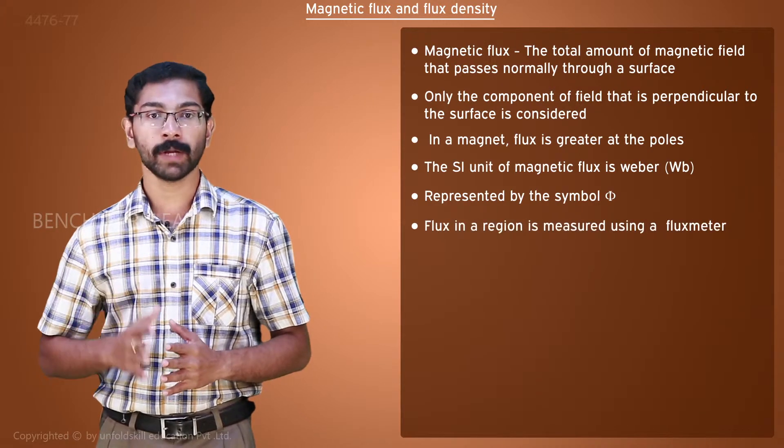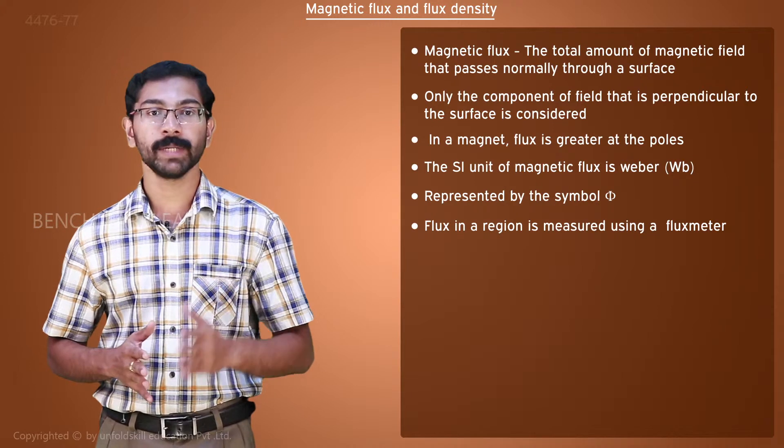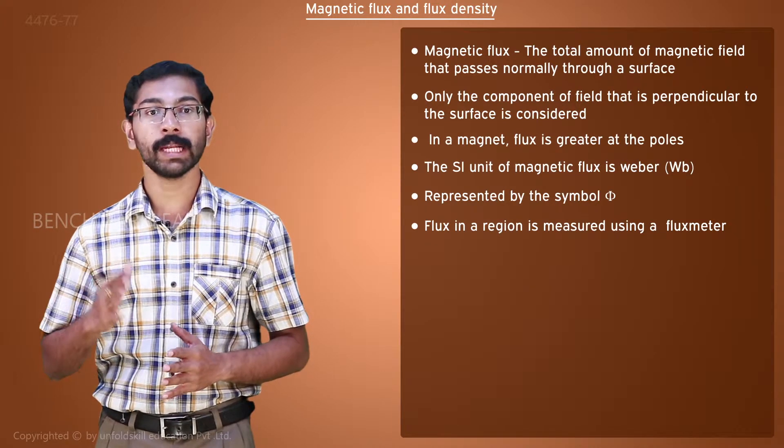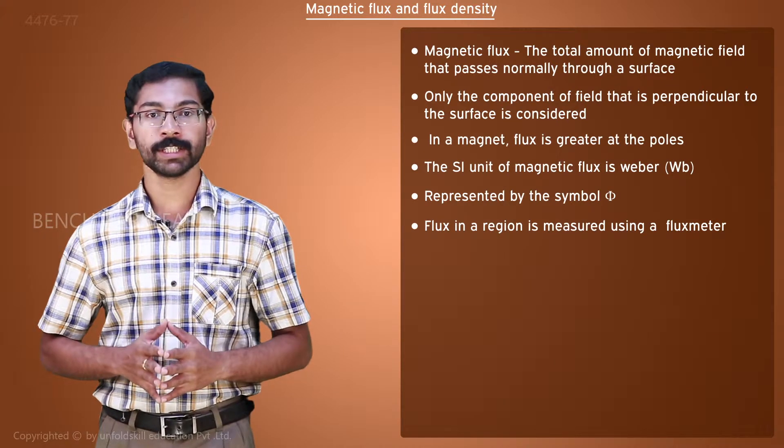The amount of magnetic flux in a region is measured by an instrument called fluxmeter. The fluxmeter makes use of the principle of electromagnetic induction to measure flux.